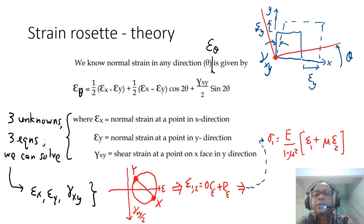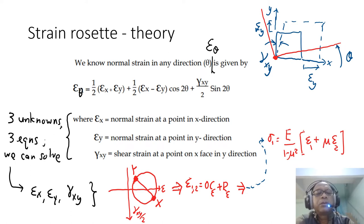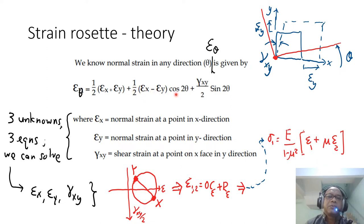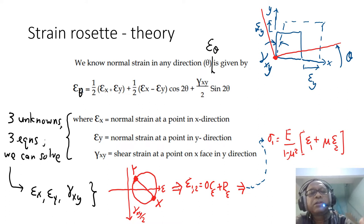For the strain rosette theory, we need to understand the theory we have covered before. We know that the normal strain in any direction theta — epsilon theta — if we rotate an element from the horizontal line by angle theta, is given by: epsilon theta equals half of (epsilon x plus epsilon y) plus half of (epsilon x minus epsilon y) times cos 2θ, plus gamma xy over 2 times sin 2θ.